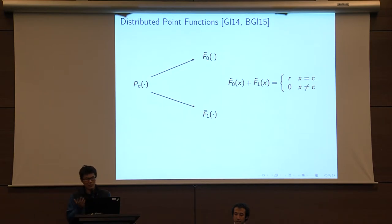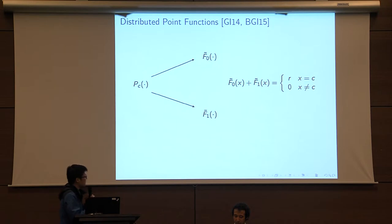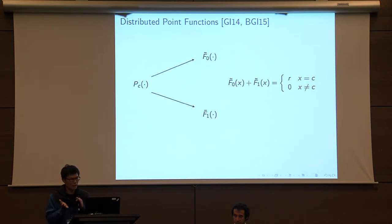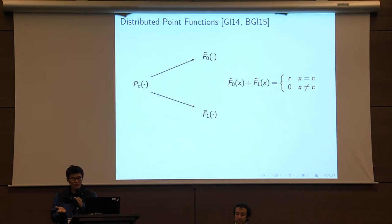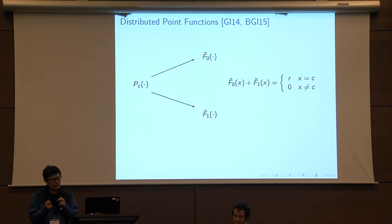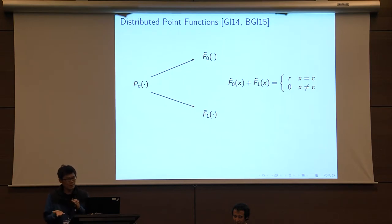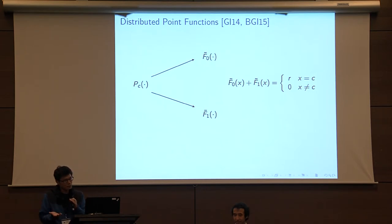Distributed point functions, or DPFs, were introduced by Gilboa and Inisha in 2014. The idea is: you start with a point function p_c, and secret share this function into two distributed point functions f̃0 and f̃1. These two functions have the property that if you evaluate each separately on an input x and sum the results, you get a point function: for input x equal to c, the sum is non-zero; for inputs not equal to c, the sum is zero.